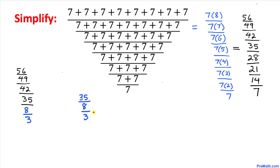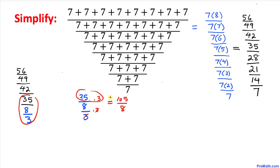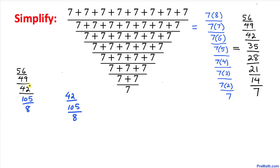Now let's focus on the next three numbers. We're going to multiply by 3 on top and by 3 on the bottom, since 3 is in the denominator. The 3s cancel. 35 times 3 is 105, divided by 8. I'm going to replace those numbers with 105 divided by 8.